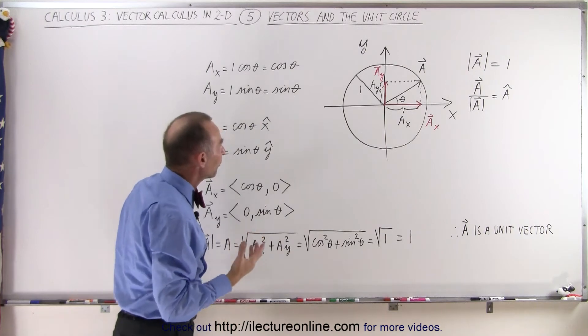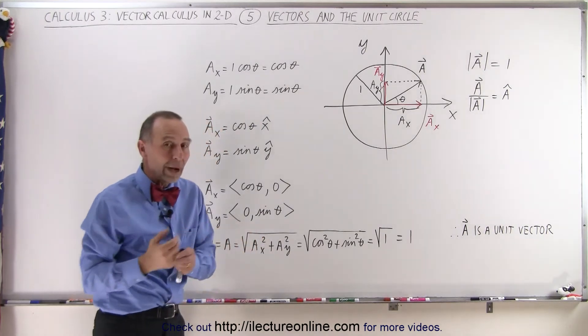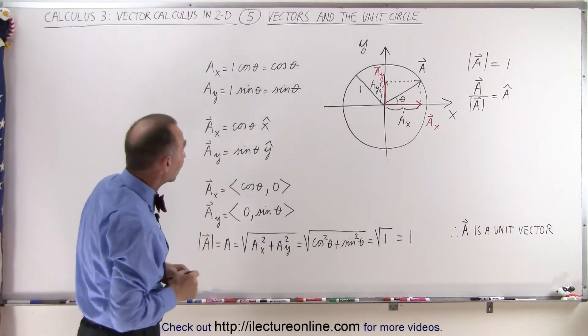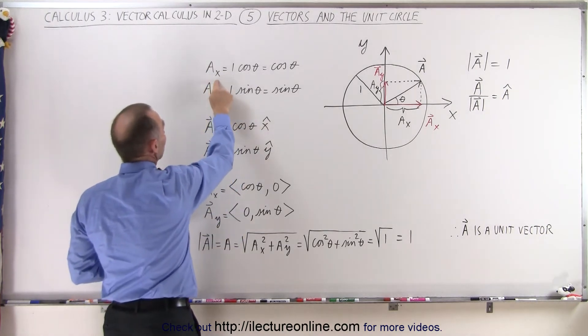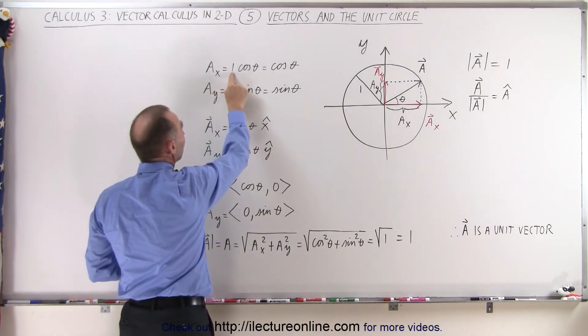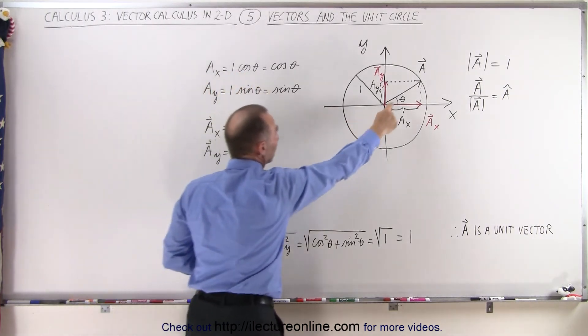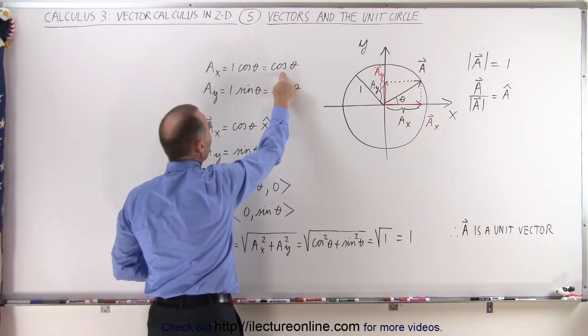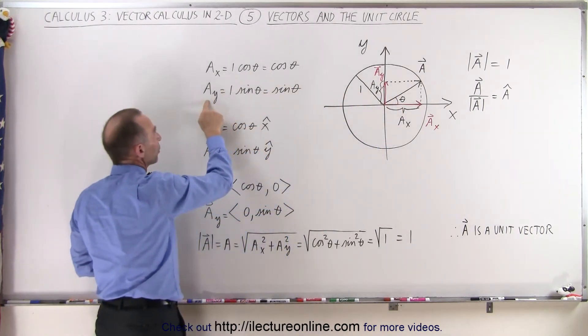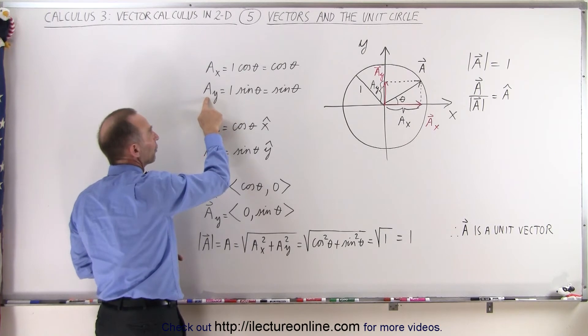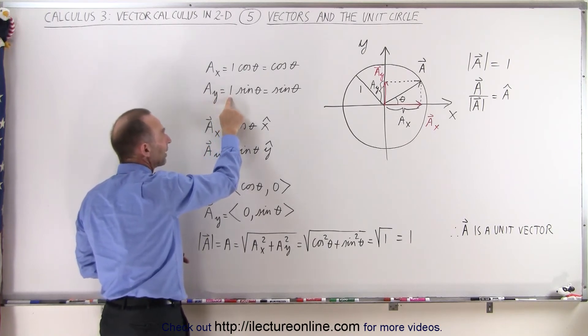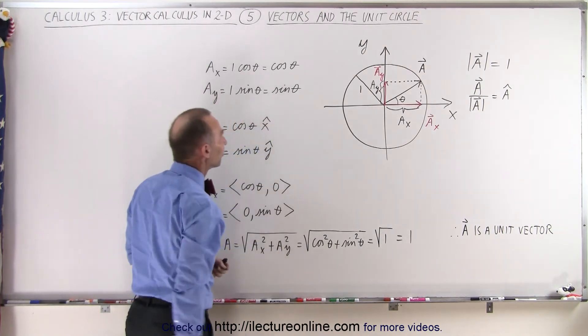Now if I try to figure out how long those x and y components are of my unit vector a, you can see that a sub x can be found by taking the magnitude of a times the cosine of the angle theta right here. That gives us the cosine of theta. The same for the y component: the magnitude of the y component of the vector a is the magnitude of a times the sine of theta, or simply sine of theta.